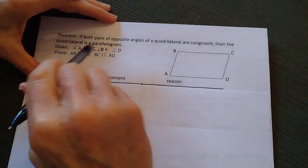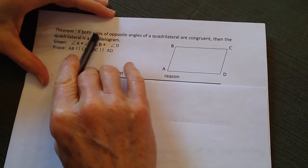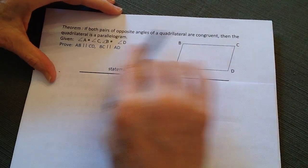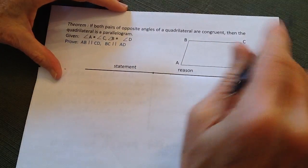All right, we're going to talk about proving the theorem: if both pairs of opposite angles of a quadrilateral are congruent, then the quadrilateral is a parallelogram. This is the converse.